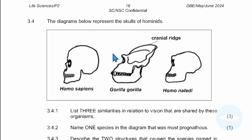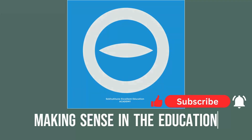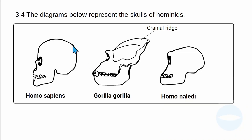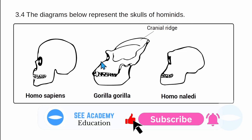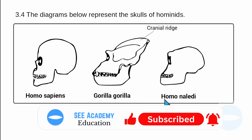Before we answer the questions, let me analyze the diagram. The questions say the diagrams below represent the skulls of hominids. As you can see, we have three skulls: this one is for Homo sapiens, here we have Gorilla gorilla, and then we have Homo naledi.